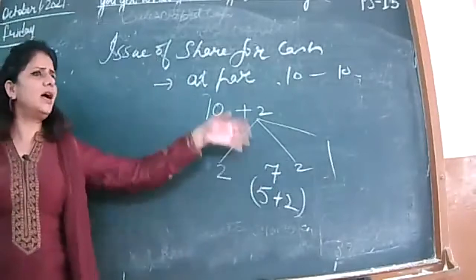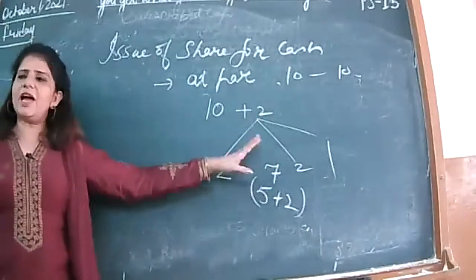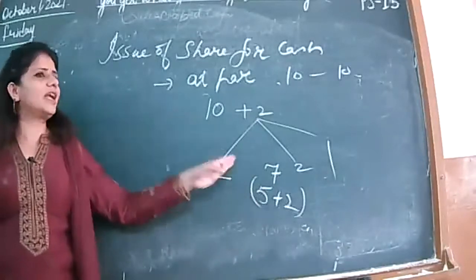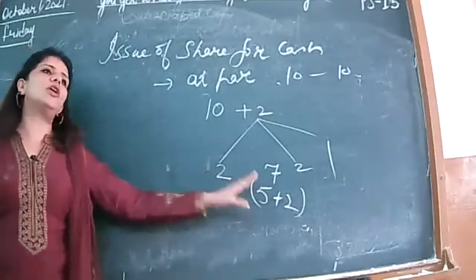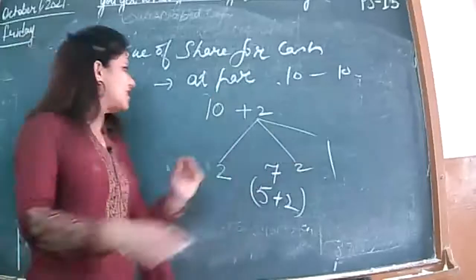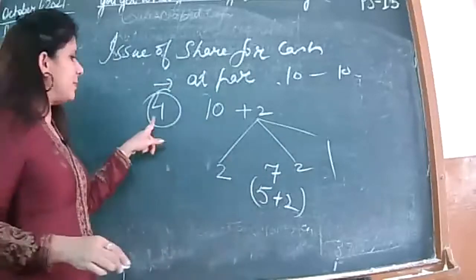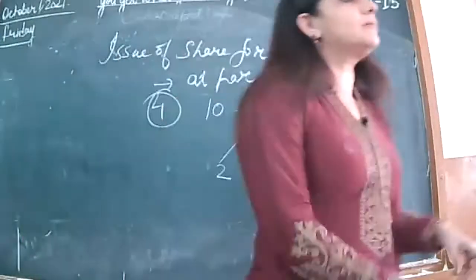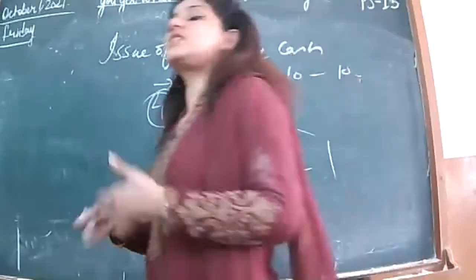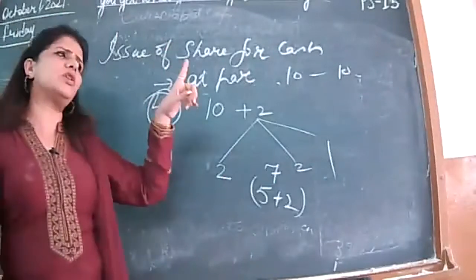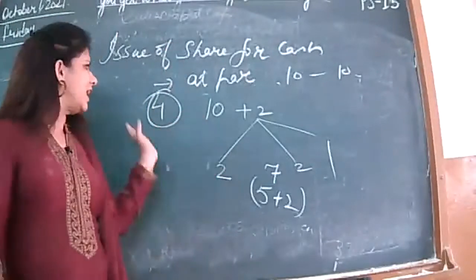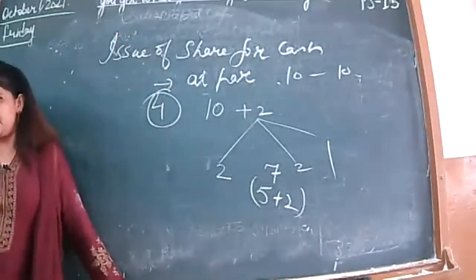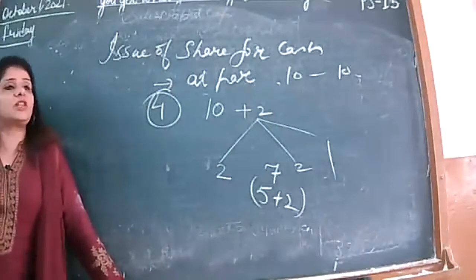He will give you the installment amounts. Sometimes premium will be split — part at application, part at allotment. For simplicity, I am assuming the premium is received at the time of allotment. First two entries remain the same — application money: bank account, then share application to share capital transfer. Now for allotment with premium, taking 10,000 shares: the entry for allotment due will be: share allotment account debit, to share capital, to security premium reserve.